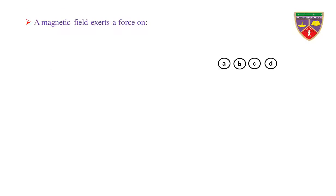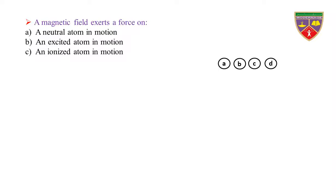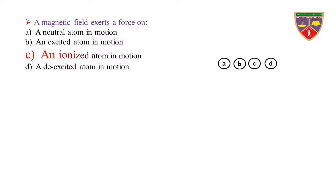A magnetic field exerts a force on: Option A: a neutral atom in motion. Option B: an excited atom in motion. Option C: an ionized atom in motion. Option D: a de-excited atom in motion. The key is an ionized atom in motion. Therefore, the correct option is C.